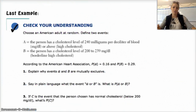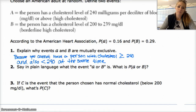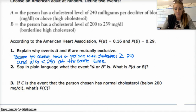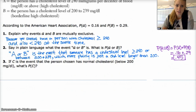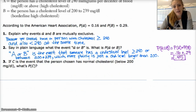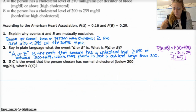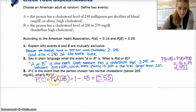Last example. A and B are mutually exclusive because you cannot have a person with cholesterol greater than or equal to 240 at the same time as they have cholesterol less than 240 — it's one or the other. A or B is the event that someone has a cholesterol level of 240 and greater or between 200 and 239, which basically means borderline high or high cholesterol — a level of 200 or greater. Since it's mutually exclusive, P(A or B) = 0.16 + 0.29 = 0.45. And the probability of C is the complement: 1 minus 0.45, which is 0.55.